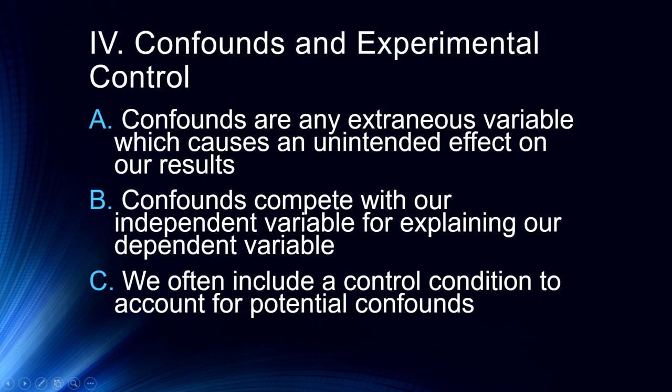We often include a control condition to account for potential confounds. In an experiment, this is a condition where participants don't receive any of the experimental variable. In a drug trial, this would be a placebo condition where participants receive a sugar pill or lactose pill rather than the experimental drug, so we can see if the drug is having an effect rather than simply time passing and people getting better. This is happening with drugs used to treat COVID-19 — drugs are being tried without a control condition, so we don't really have any good data on those drugs.